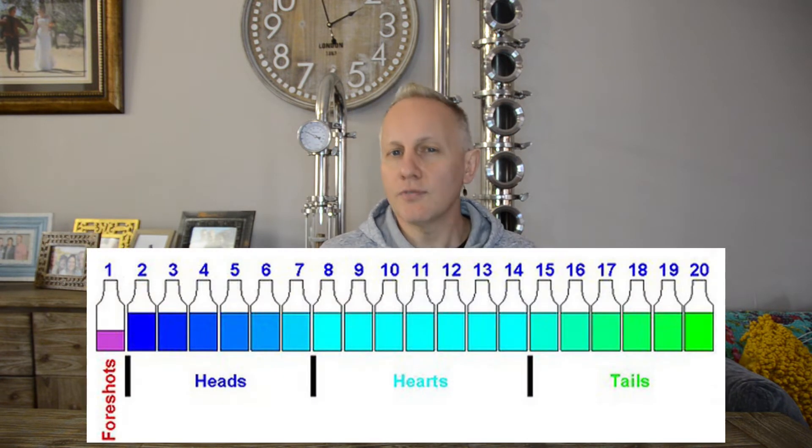During distillation, the spirit you produce will undergo different phases or cuts as it goes through the run. We know them as foreshots, heads, hearts, and tails. Foreshots is the first five percent of your run — normally the more volatile liquids like methanol. Methanol is extremely toxic and volatile; you do not want to consume it at all. You'll identify methanol by its sharp solvent smell. It's very toxic and can cause blindness — separate it and discard it immediately.